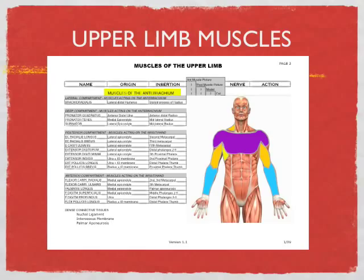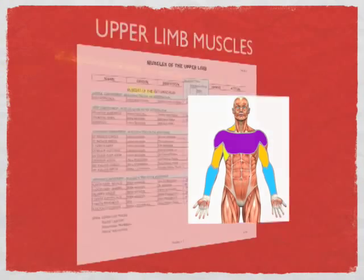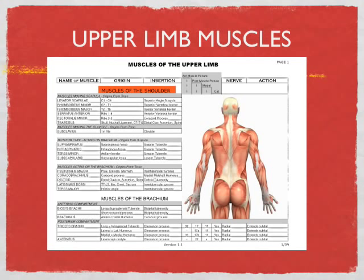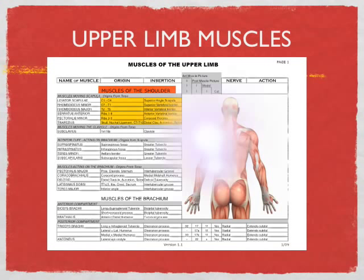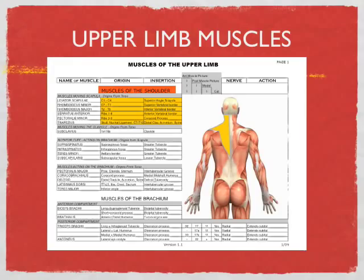Looking from the back, the muscles of the shoulder are all up in this area. Taking it group by group, you can see these are muscles that move the scapula. These muscles run from the vertebrae or ribs over to the scapula, and they move your scapula around — you can raise it, lower it, bring it forward, bring it back. That whole group is just positioning your scapula.